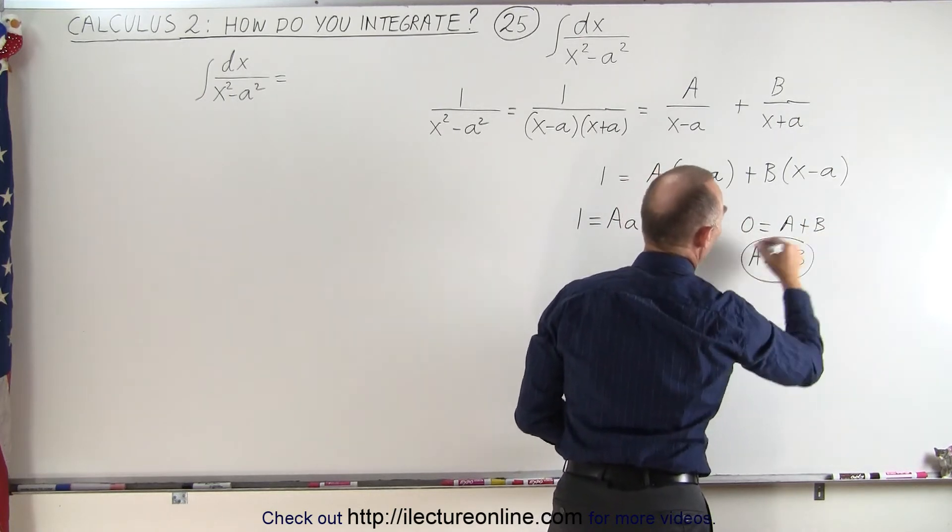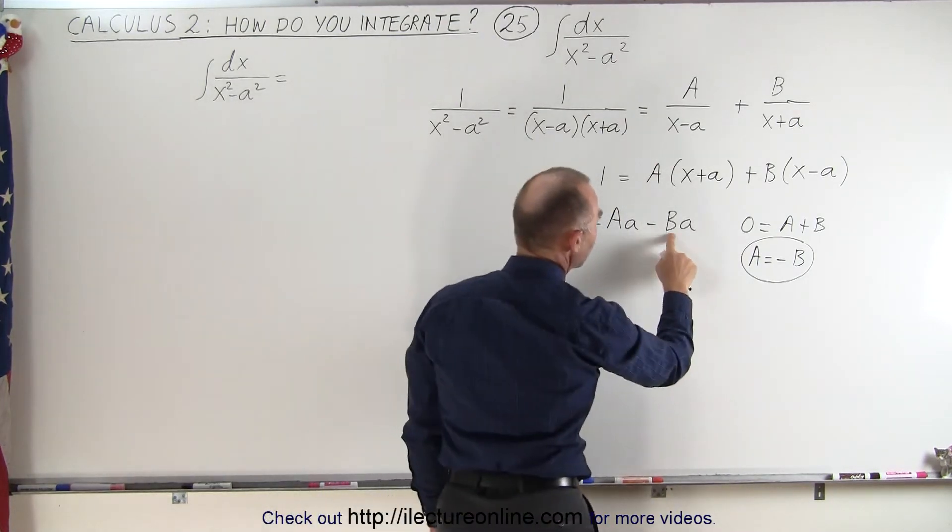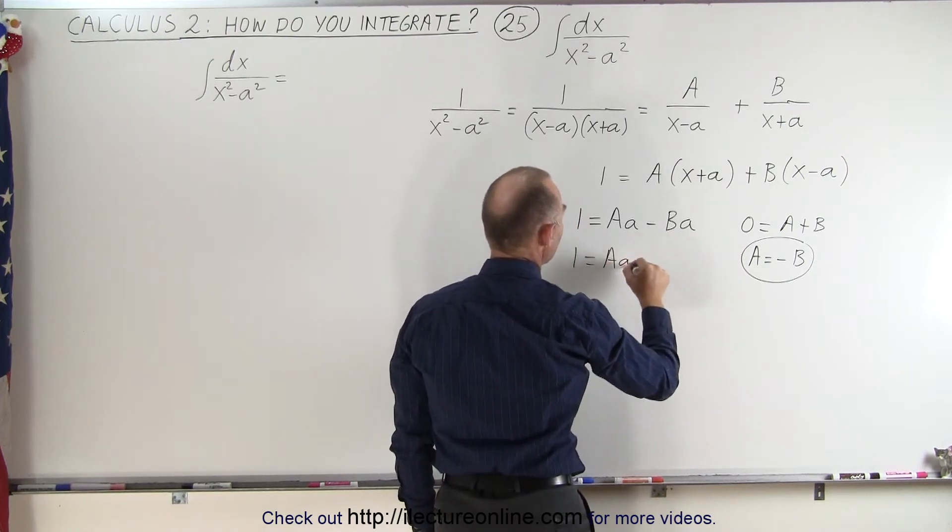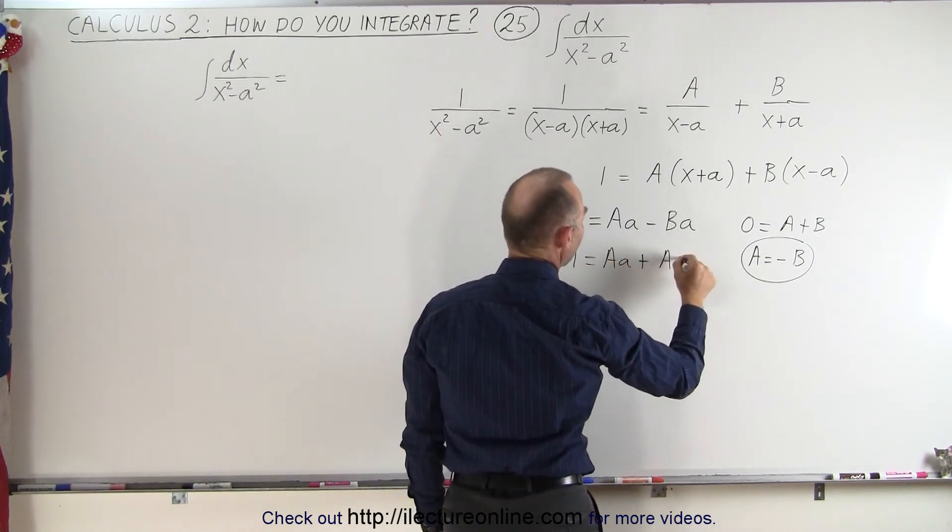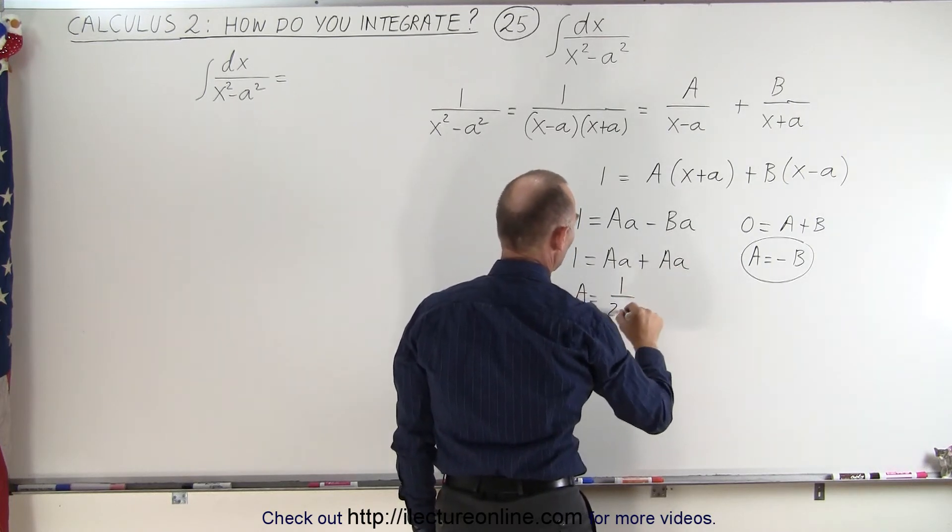So in this case, one is the negative of the other. When we plug that in here, so B becomes a negative A, so we get 1 is equal to A times a plus another a, which means that A is equal to 1 over 2a.